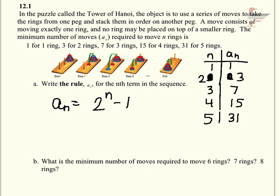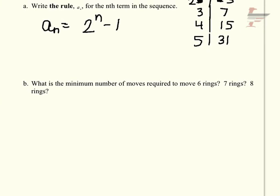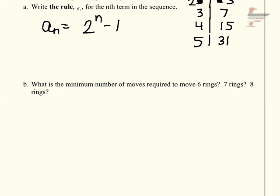Part b says, what is the minimum number of moves required to move 6 rings, 7 rings, and 8 rings? I'm just going to scoot this up so we can still see the rule. So that is just asking you to plug in 6, 7, and 8 for n.